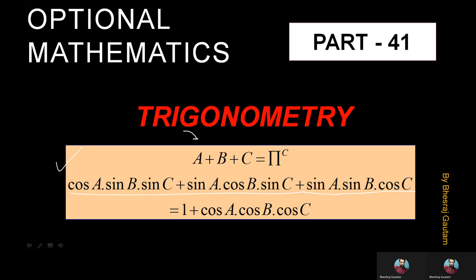Additionally, the conditional information is given where A, B, and C are the angles of a triangle, which means A plus B plus C is equal to pi radian, that is 180 degrees. We are supposed to prove this equals 1 plus cosA·cosB·cosC.